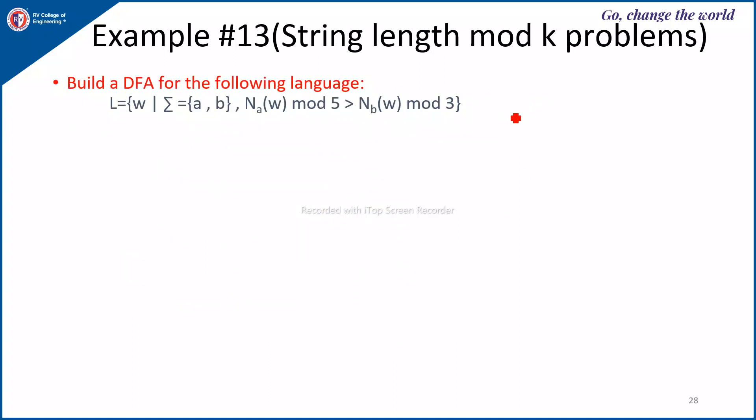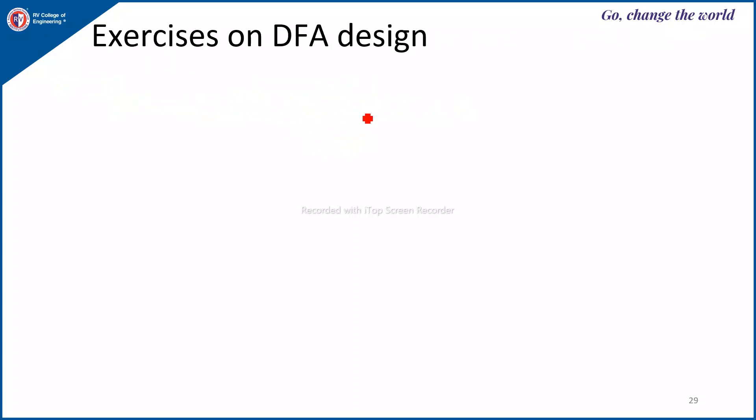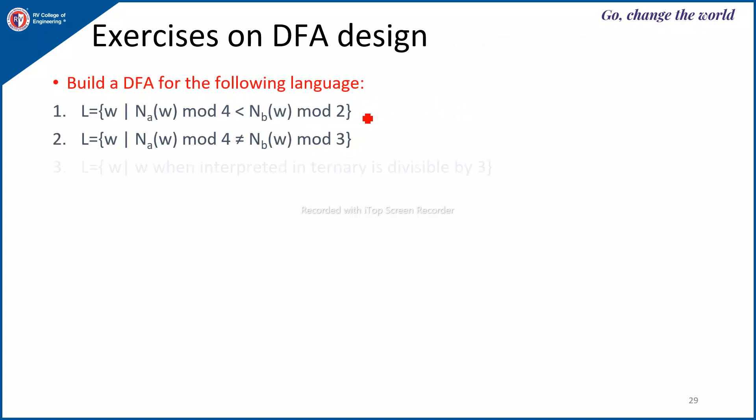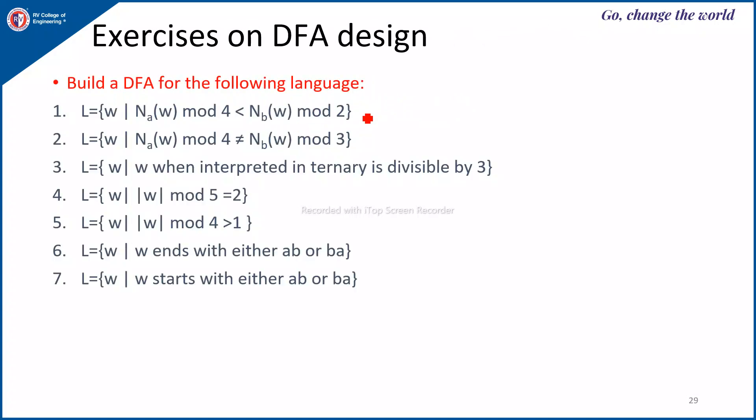Here also you can consider two indexes, first index with A's mod 5 and second index with B mod 3 and write the same way as we have drawn, and based on the condition you have to identify the final state. These are some additional exercises which you could try on your own. Thank you.